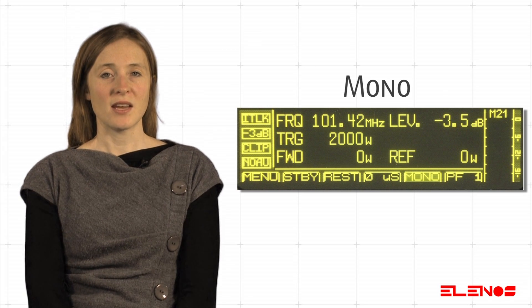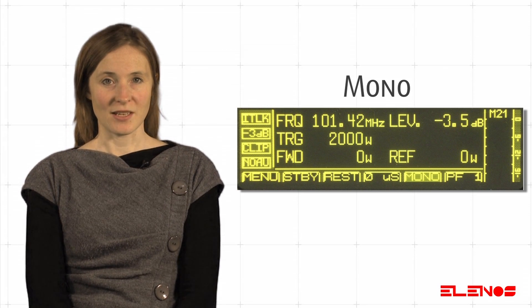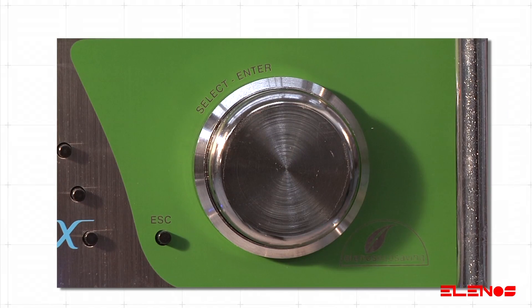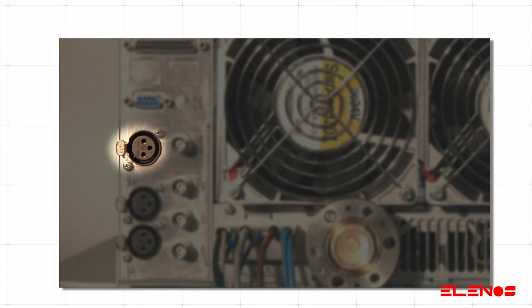Once the desired item has been selected, press the encoder to apply the changes. Please remember that the other inputs can be used that cannot be set directly from the main screen. For example, AES/EBU.